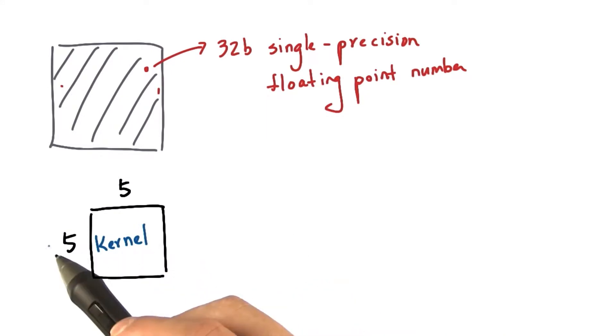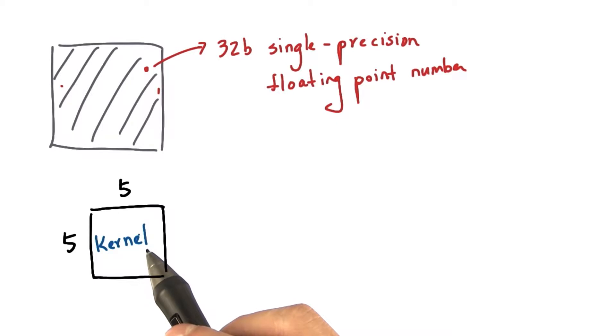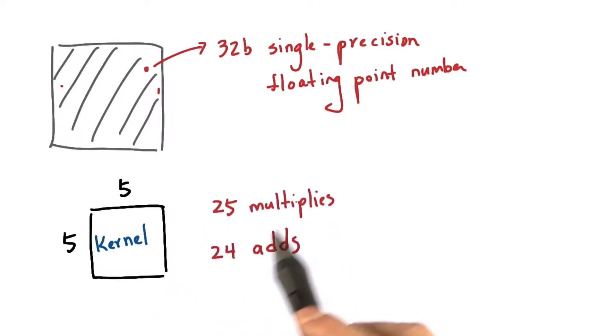Let's consider that the kernel is a 5x5 kernel, and we're not going to worry about where it's stored. Then our operation will be 25 multiplies and 24 adds to compute each pixel output.